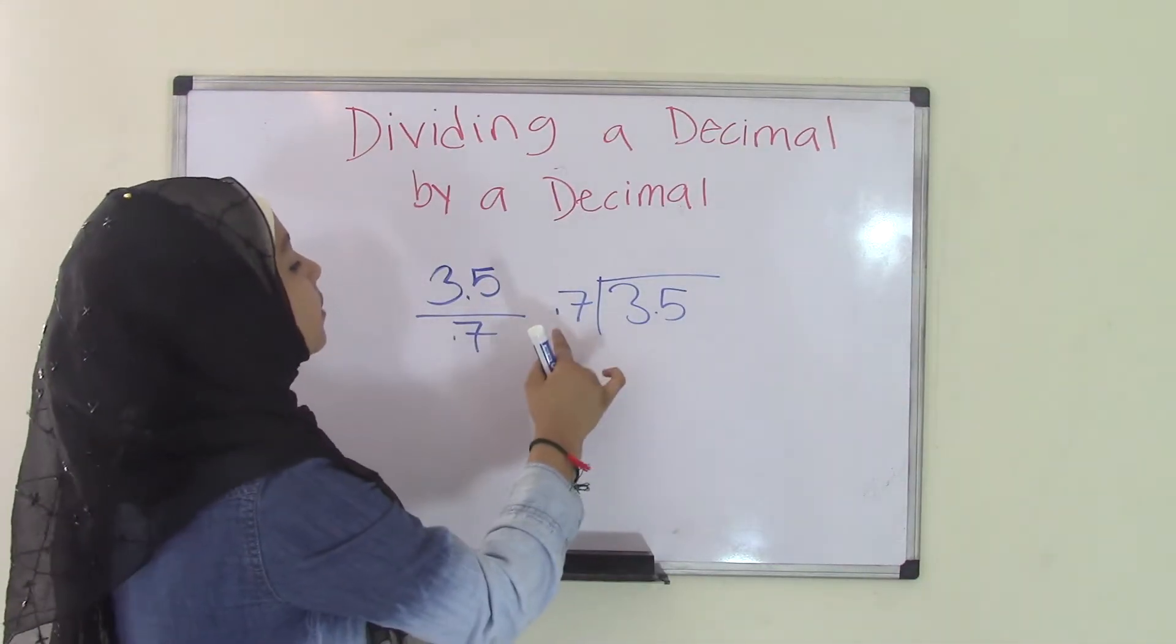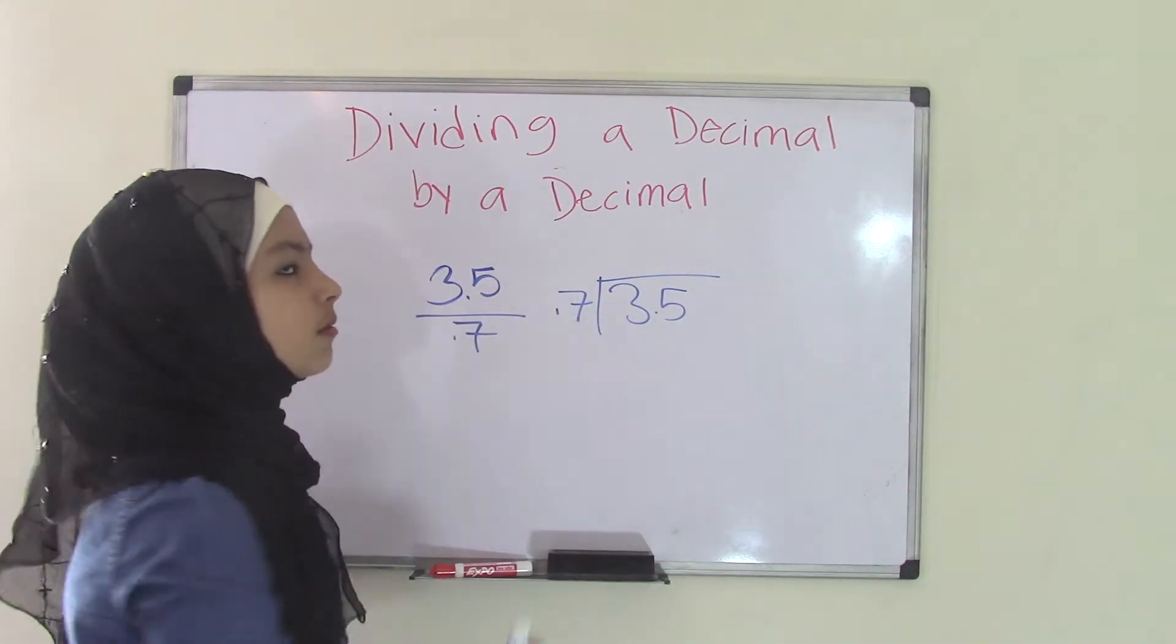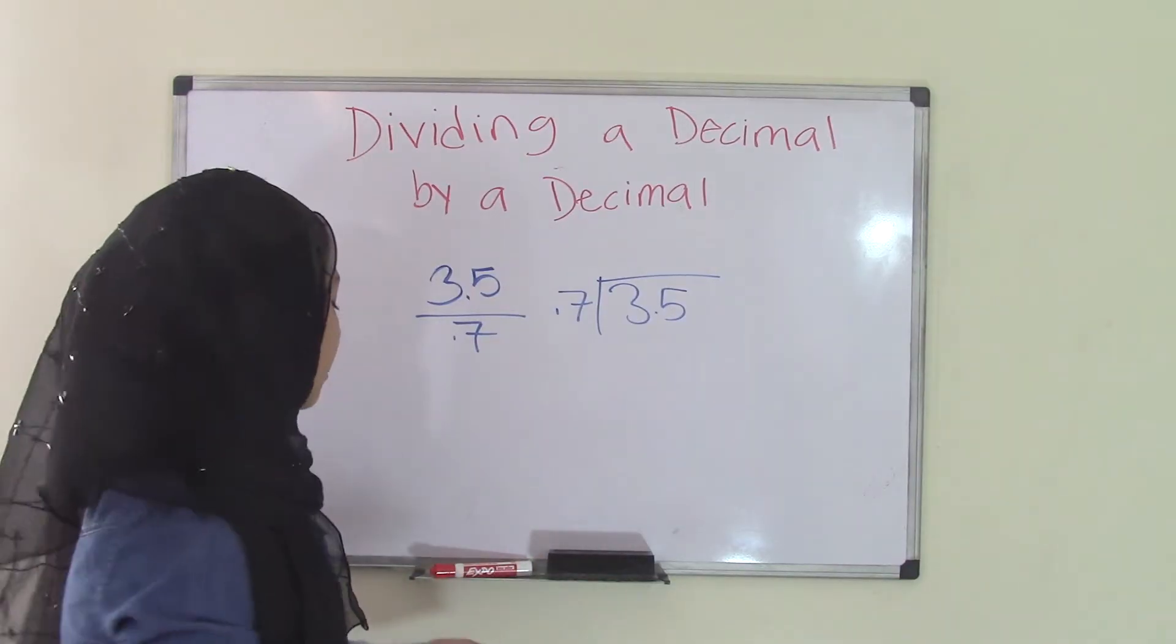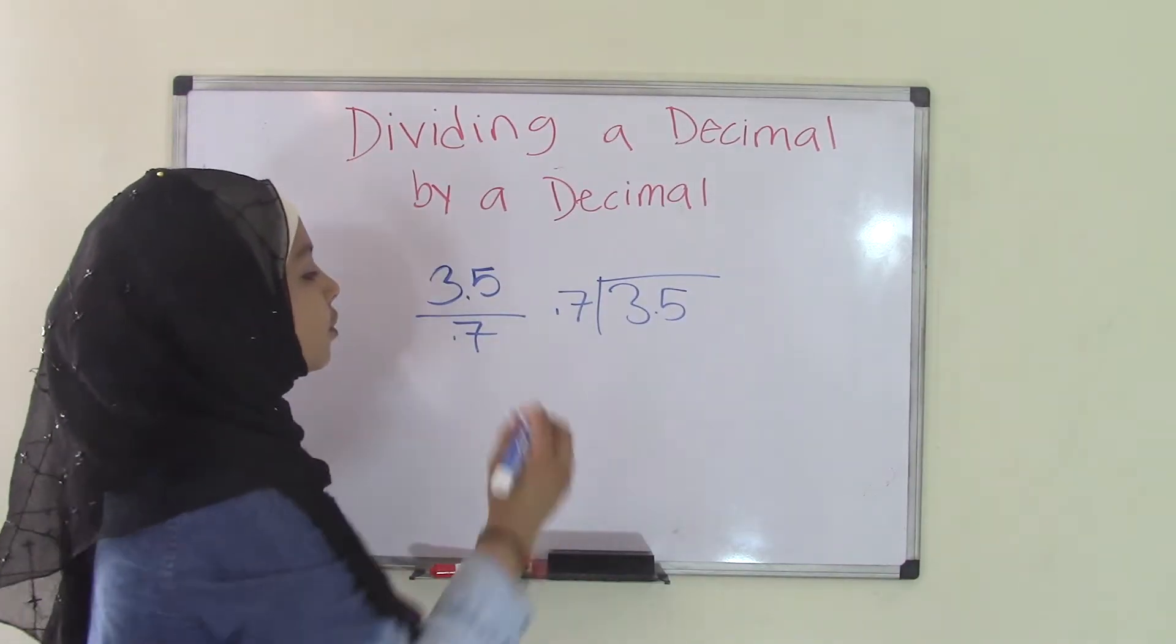Because even if you were to do 7 divided by 3 then you have a decimal point, it gets all confusing. Well there's really nothing to be confused about because it's really easy. All you have to do is take the decimal point.